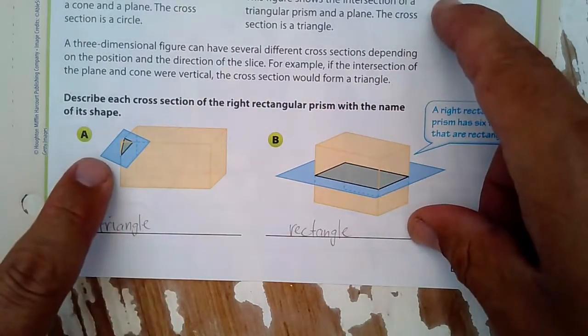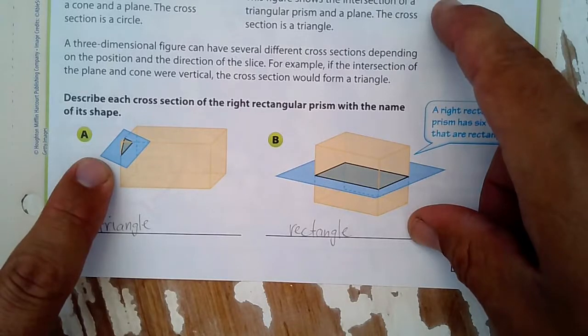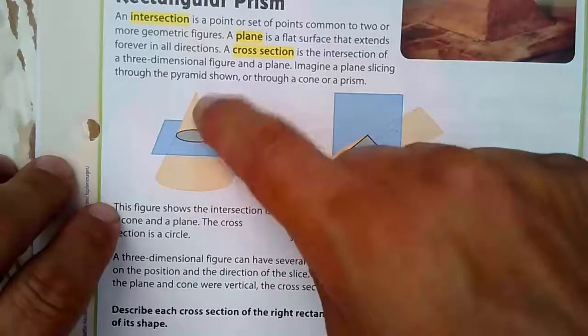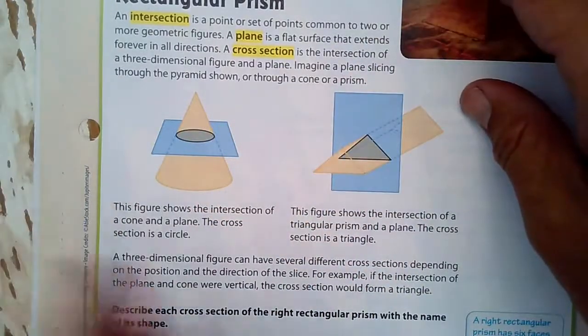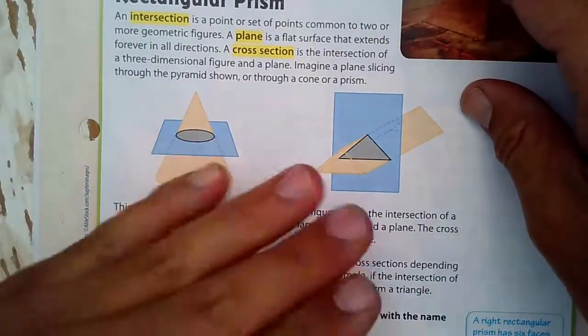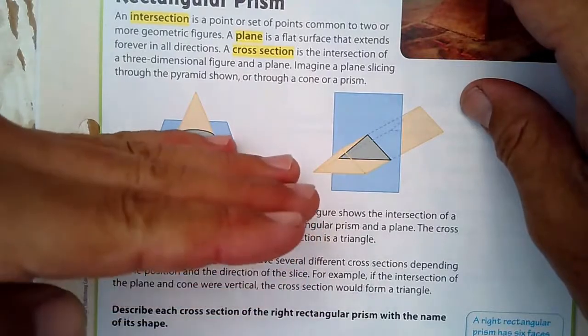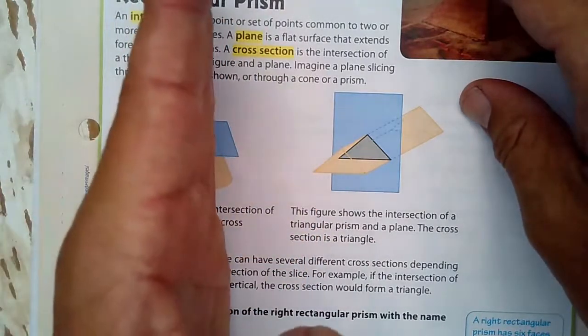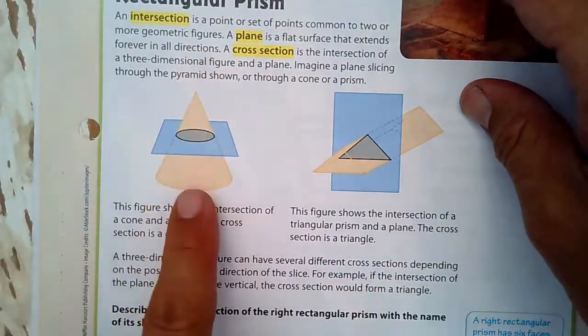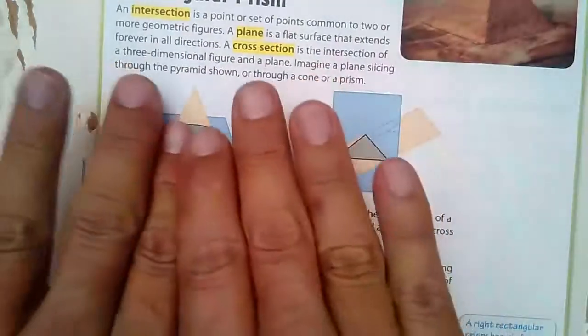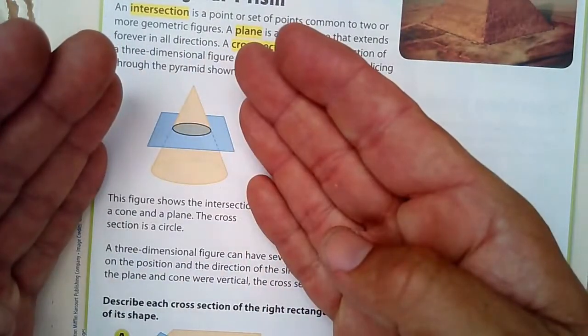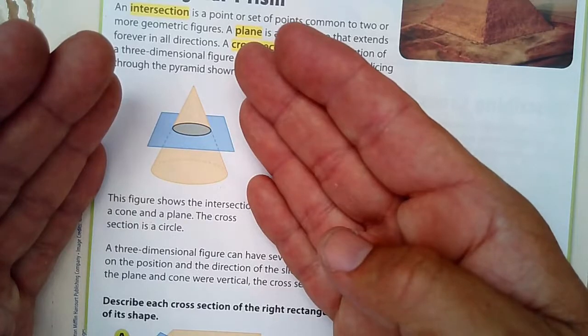For example, if the intersection of the plane and cone were vertical, the cross-section would form a triangle. We're vertical right here. Imagine that this is no longer horizontal. Vertical is straight up and down. If this were straight up and down, and you were to open it up, you would see that the cross-section is actually a triangle.